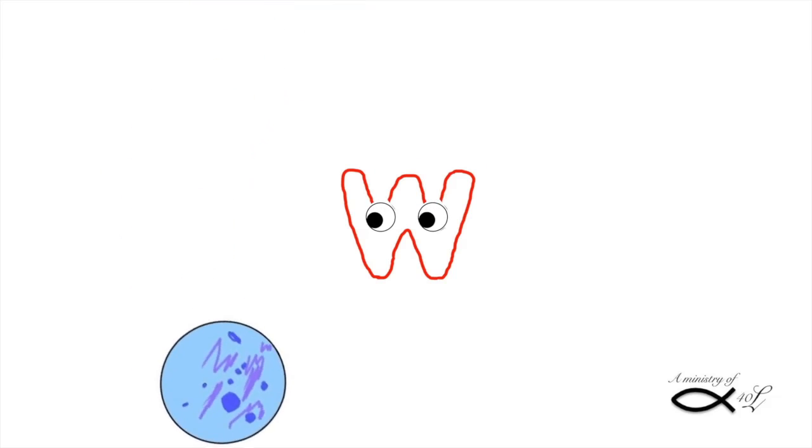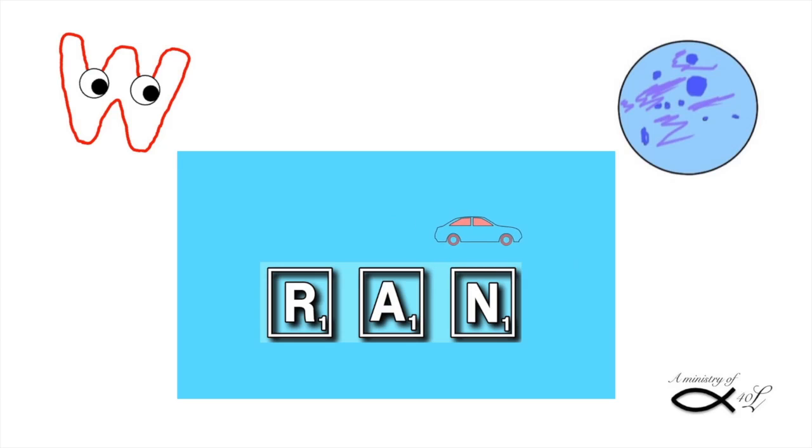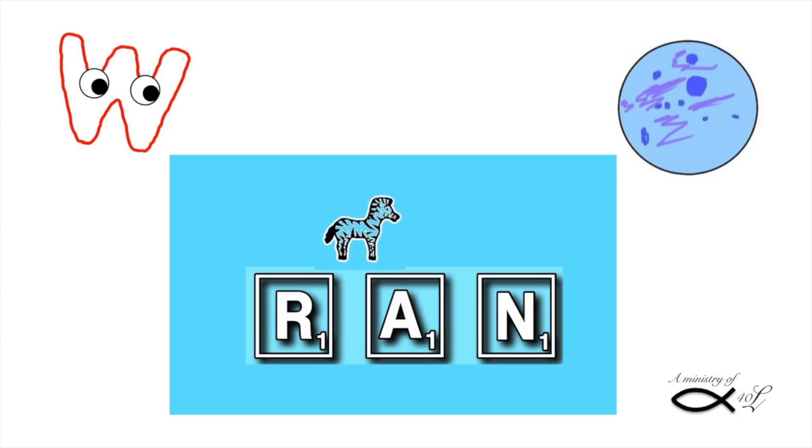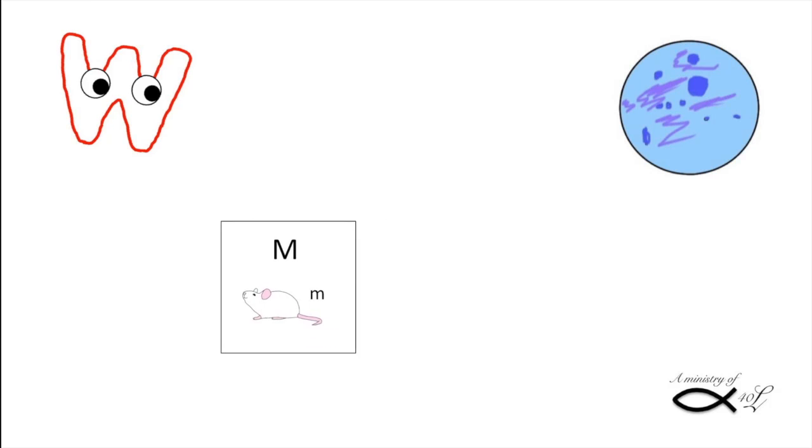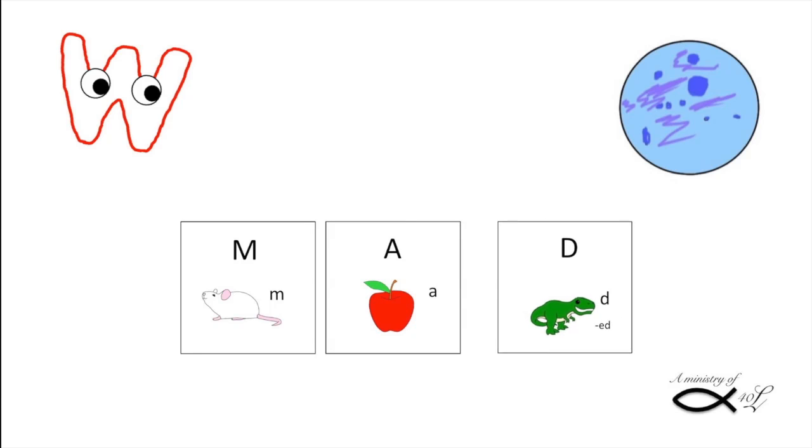A fun way to learn to blend is to run a small toy race car or a small plastic animal over letters, blending each sound and then saying the word as the car or animal crosses each sound. R, A, N, RAN. You can use any letters you have on hand or make your own. Use letters written on index card or letter game tiles or magnetic letters. You can also use 40L's letter cards. This is a few of these cards spelling out the word MAD.